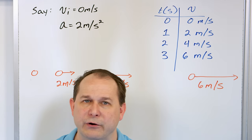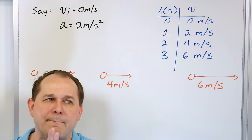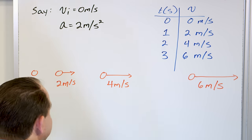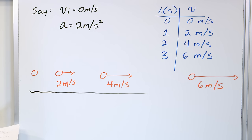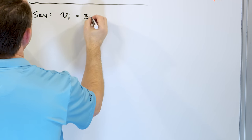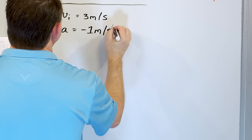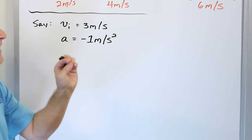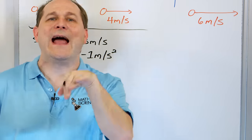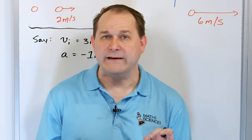Now let's do the same thing where I'm moving in one direction but my acceleration is negative — meaning I'm really braking. Let's take the example where the initial velocity of some car is 3 meters per second, but the acceleration is negative 1 meter per second squared. What does this physically mean? It means that every second that ticks by, I'm losing or reducing my velocity by 1 meter per second every second. So I go down by 1 meter per second, then another second ticks by and my velocity goes down by another meter per second. I'm slowing down at that rate.